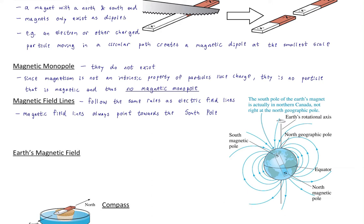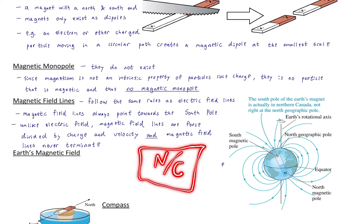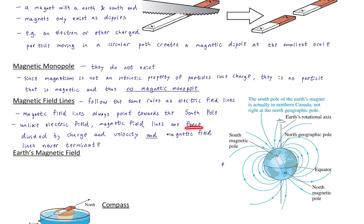Unlike electric field lines, magnetic field lines are force divided by charge and velocity. The idea of the electric field line was that it was newtons per coulomb — force normalized by charge. Here, this is force normalized by charge and velocity, so definitely different units. The magnetic field has units of teslas. And magnetic field lines never terminate — these are two big differences between magnetic field lines and electric field lines, which otherwise have a lot of similarities.